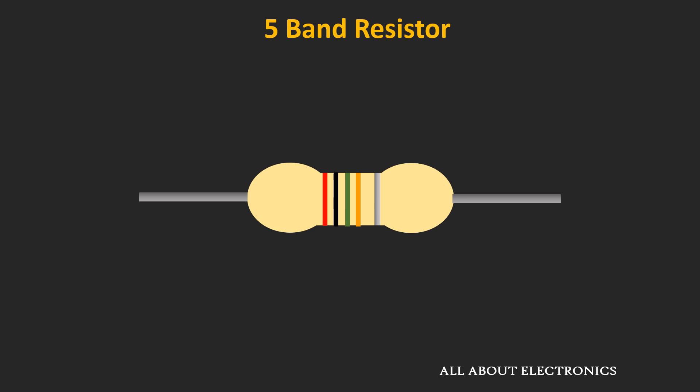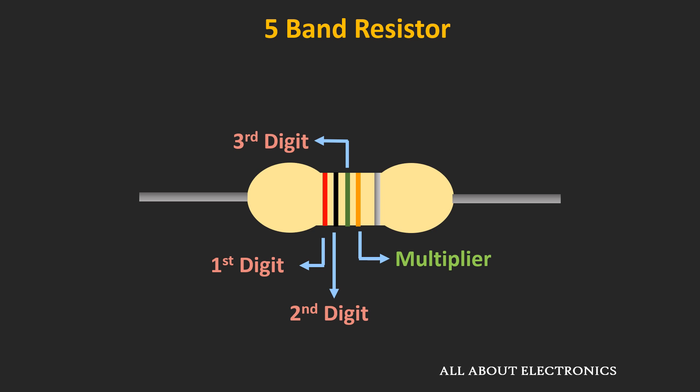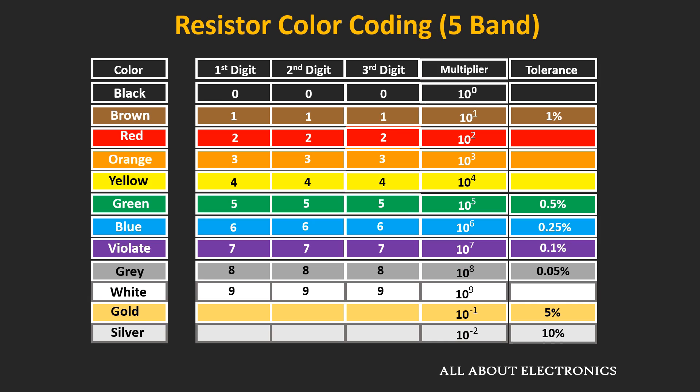Now let us find out how to determine the value of a resistor with 5 color bands. In a 5-band resistor, the first three color bands define the first three digits of the resistor's value. The fourth band defines the multiplying factor, and the fifth band defines the tolerance value. Here is the table for the 5-band resistor showing each digit, multiplying factor, and tolerance value for each color.